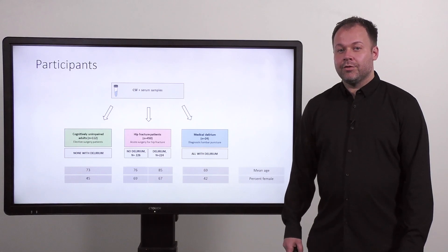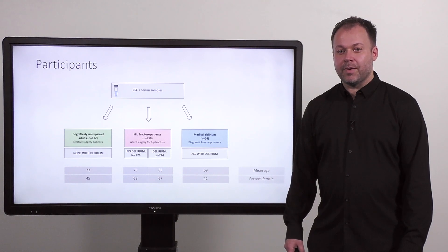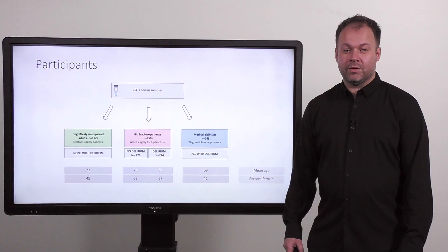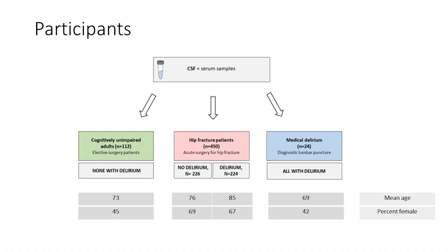In order to investigate this, we obtained parallel cerebrospinal fluid and serum samples from three groups of patients. Cognitively unimpaired adults—that was patients undergoing elective surgery, where samples were taken during spinal anesthesia. And the main group, hip fracture patients, where samples were obtained in a similar manner, and patients followed daily during admission for symptoms of delirium.